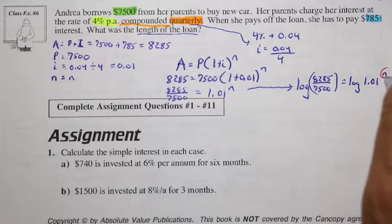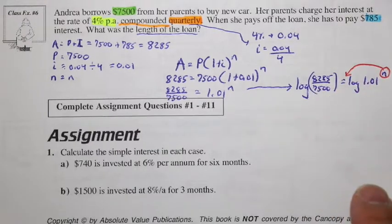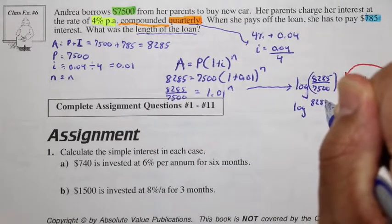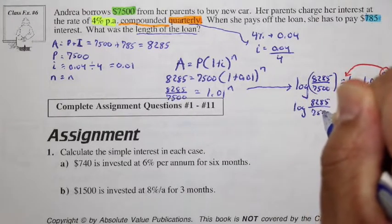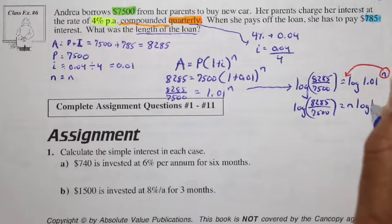And we know from a familiar law of logarithms, the exponent in the argument can come down to become a coefficient. So we have log of 8,285 over 7,500 is equal to N log of 1.01.